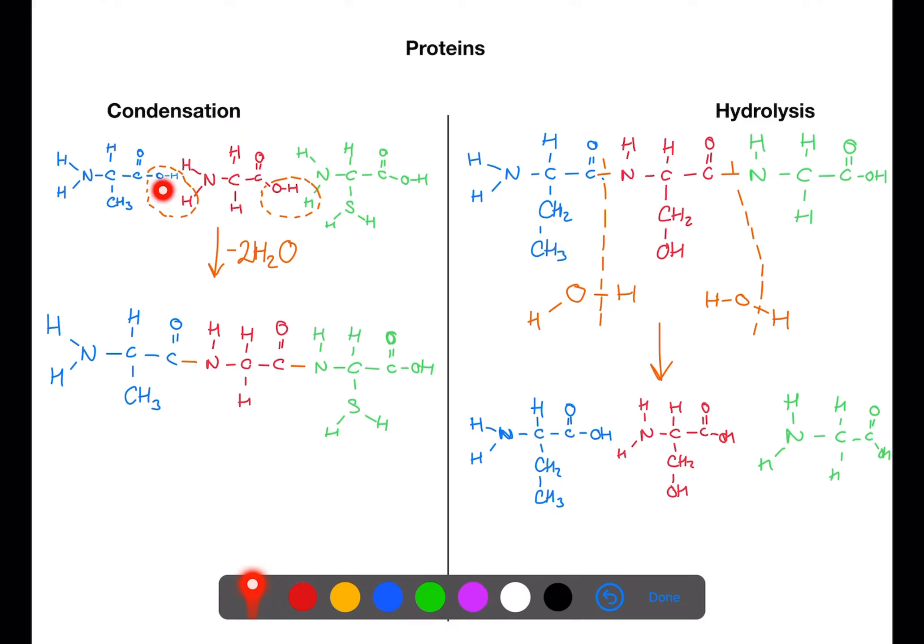Here we can see three amino acids joining together to make a polypeptide. We take the hydroxyl group from the carboxyl side of one amino acid and one of the hydrogens from the amino group of another amino acid and we take them away to make water.